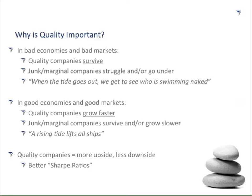It's the marginal companies that get wiped out by market contractions. As Warren Buffett said, to summarize what happens in bad economies: when the tide goes out, we get to see who's swimming naked — and those are the companies that struggle. Now let's flip to the other side of the coin: good economies and good markets.